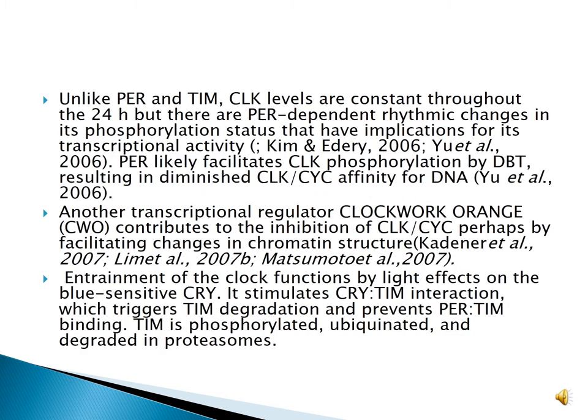Unlike PER and TIM, CLK levels are constant throughout the 24 hours, but there are PER-dependent rhythmic changes in its phosphorylation states that have implications for its transcriptional activity. PER likely facilitates CLK phosphorylation by DBT, resulting in diminished CLK-CYC affinity for DNA. Another transcriptional regulator, Clockwork Orange (CWO), contributes to the inhibition of CLK-CYC, perhaps by facilitating changes in chromatin structure.